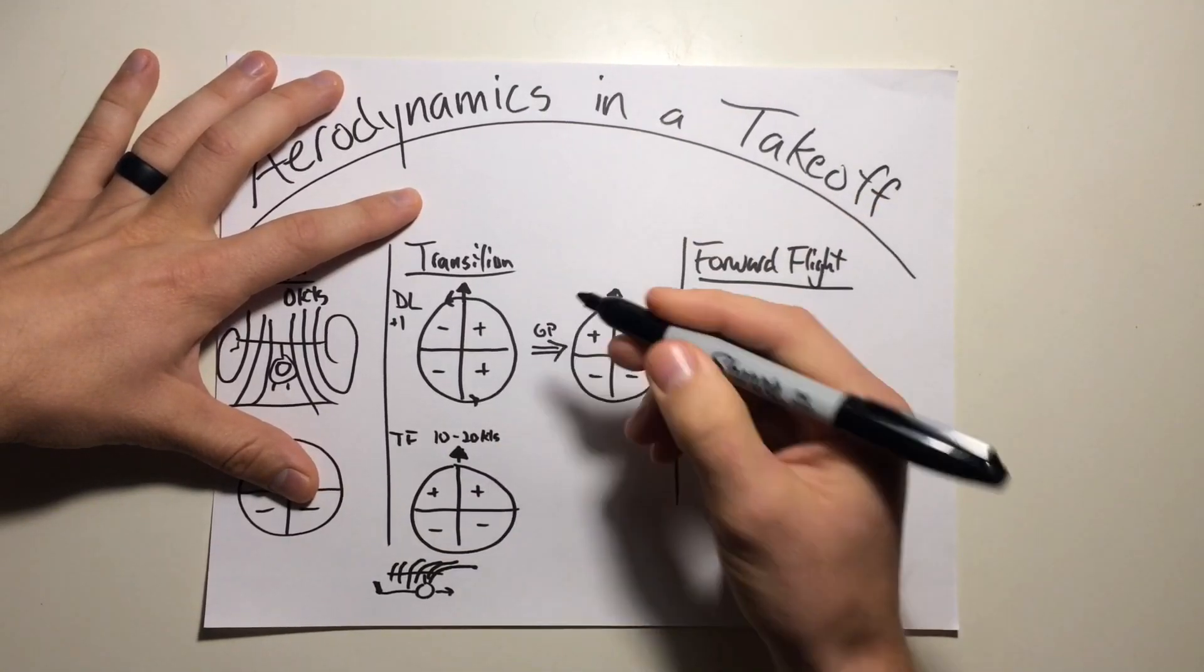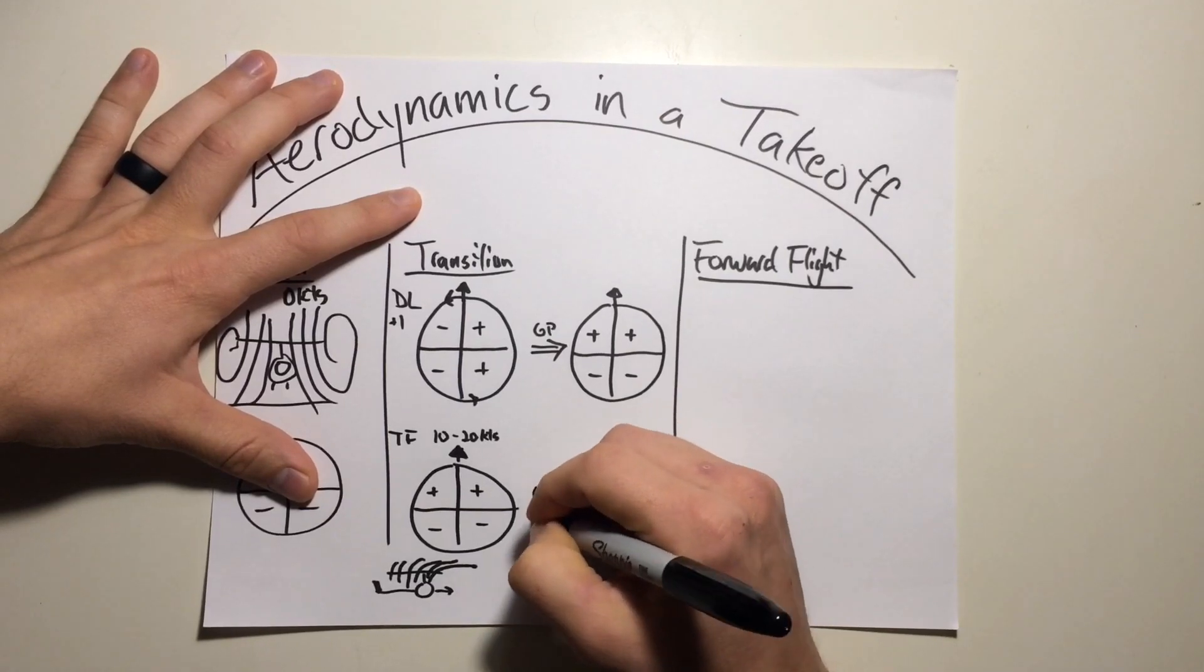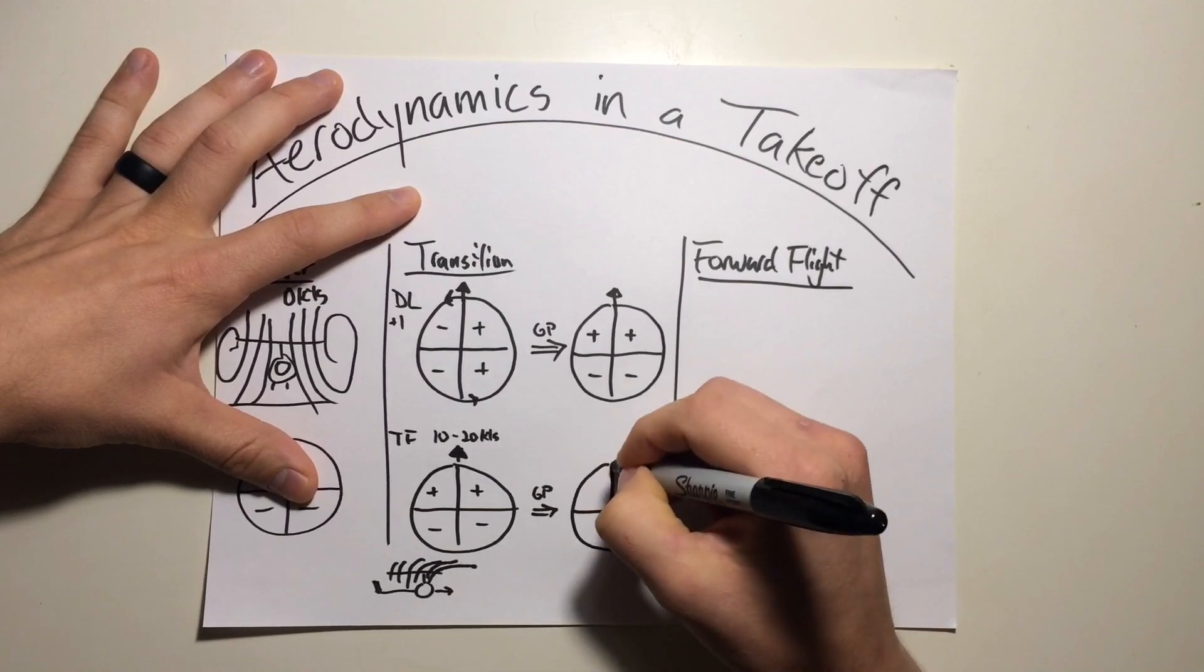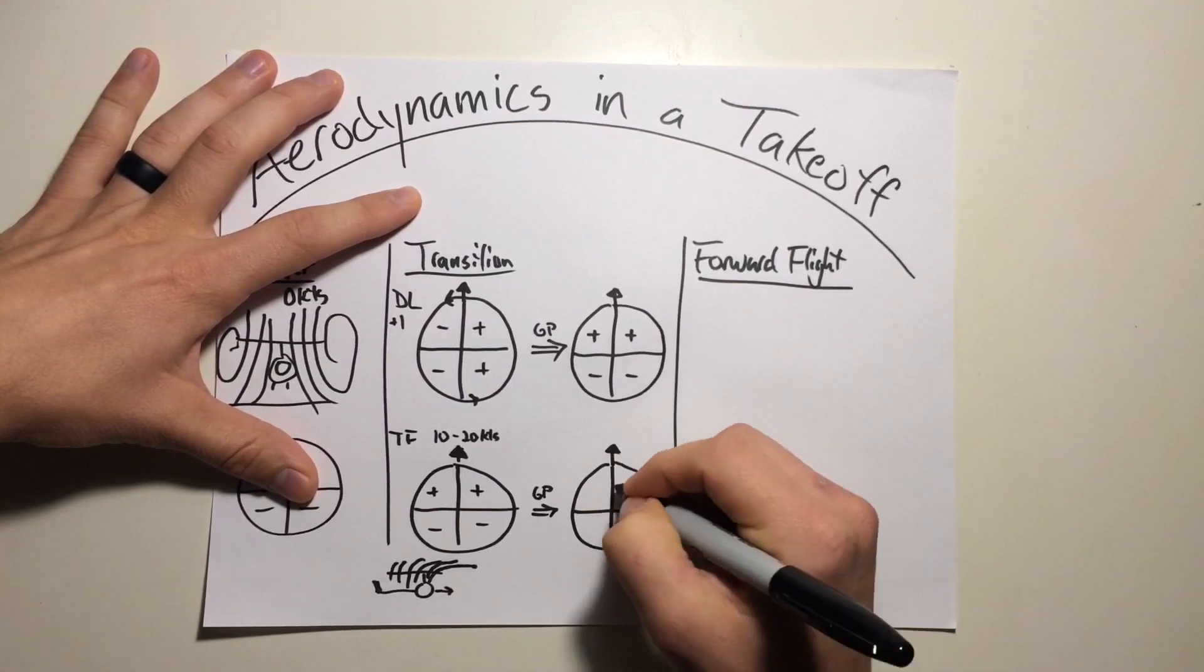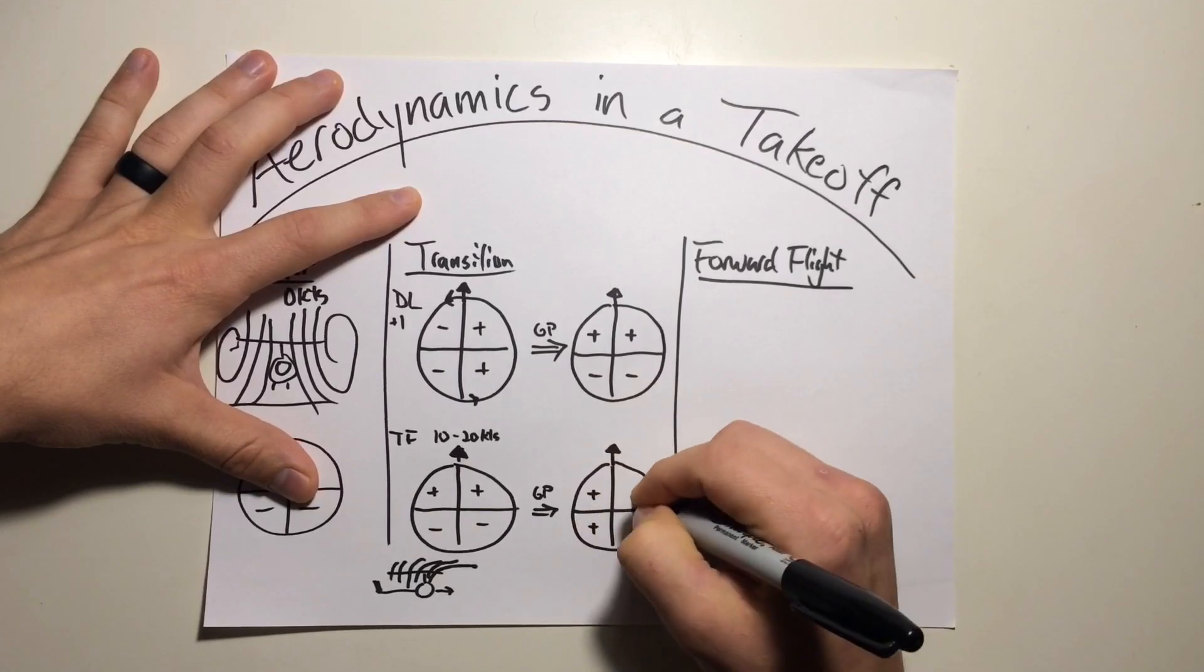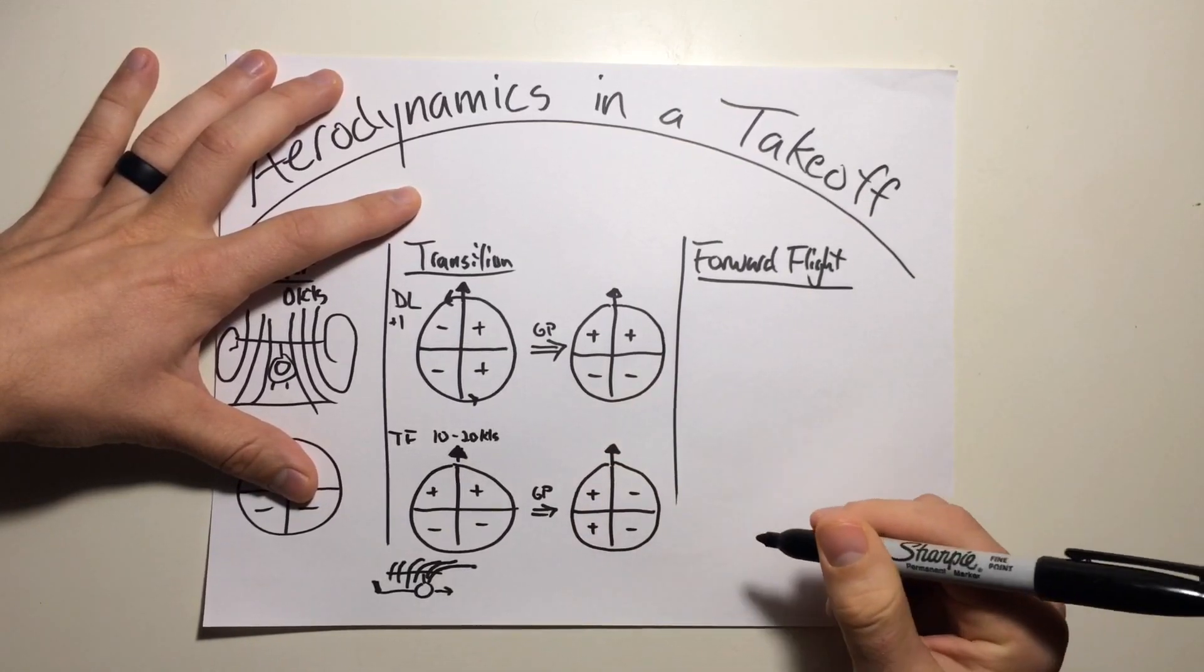But we can't leave it right there. We're going to have to take into account gyroscopic precession. So this makes everything manifest 90 degrees later in the plane of rotation. So that results in this forward half rotating around to the left half, increasing lift, and decreasing lift on the right half.